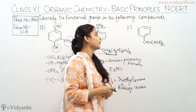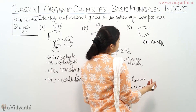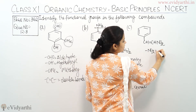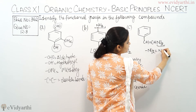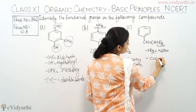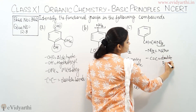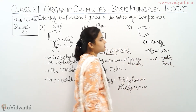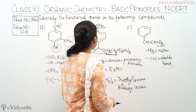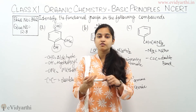Coming to the third part of this question: what are the functional groups present in this compound? First is the nitro group, NO2 — it is the nitro group present in this compound. And there is also a C=C double bond present here. So two functional groups are present: nitro and the double bond.